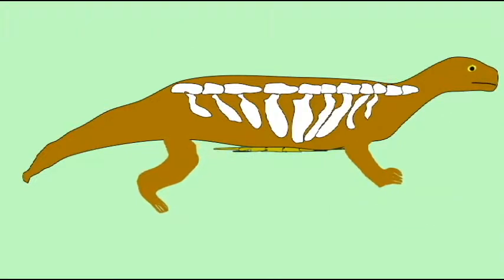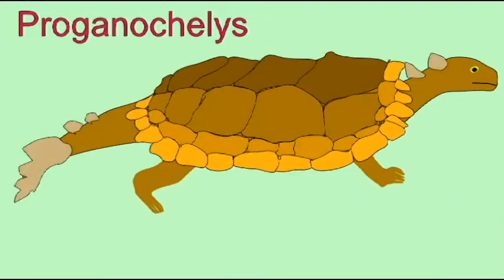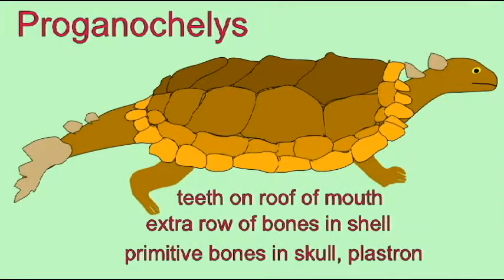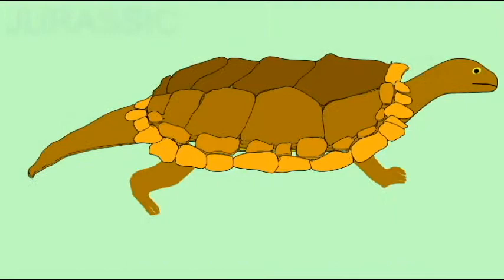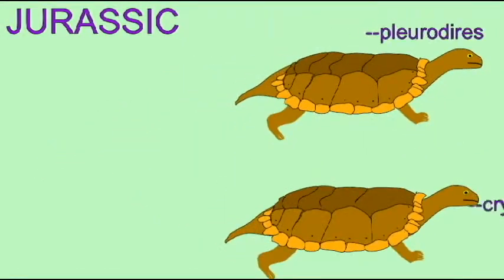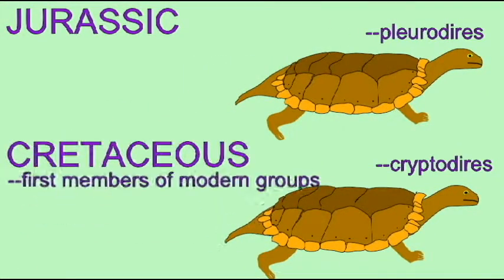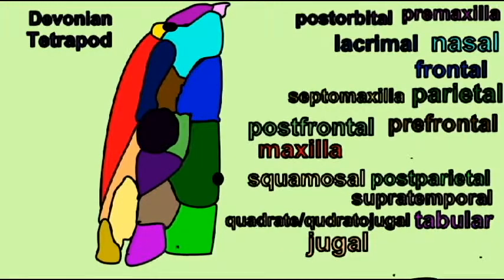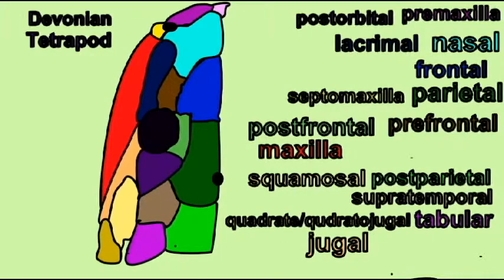Such as the shoulder girdle being moved inside the ribcage, which is something which makes turtles unique. So there should be no intermediate features because in the design model, complexity cannot evolve in stages.